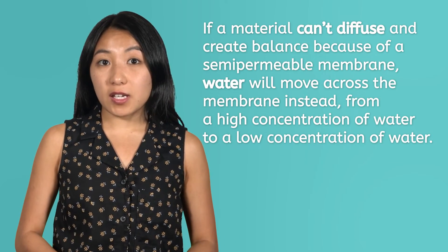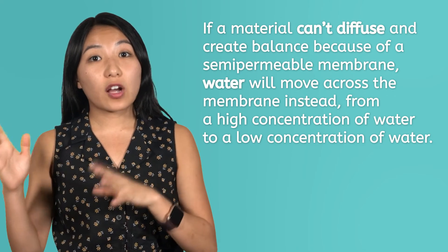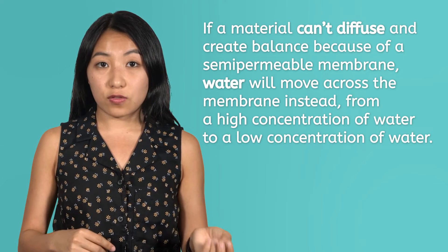The big takeaway from this story is that if a material can't diffuse and create balance because of a semi-permeable membrane, water will move across the membrane instead — from a high concentration of water to a low concentration of water. Of course, osmosis can be very helpful for life forms as well. For instance, when we are dehydrated and drink water, the water moves in our bodies from a higher concentration outside of our cells to a lower concentration inside of our cells, providing life-giving support exactly where it is needed with no energy required. Hence, osmosis is considered a form of passive transport.